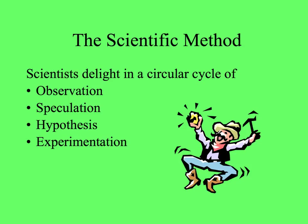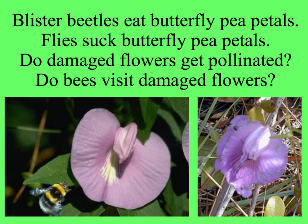Getting back to that butterfly pea system — blister beetles eat the butterfly pea petals, and little flies suck the petals, discoloring them. Do damaged flowers get pollinated? Do bees visit damaged flowers? These are first the observations we would make, and then some questions we might ask.